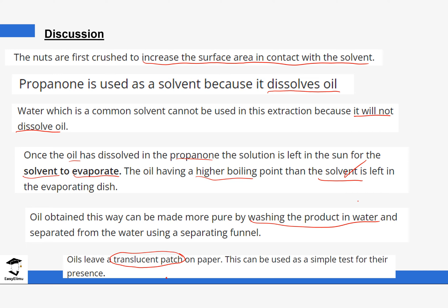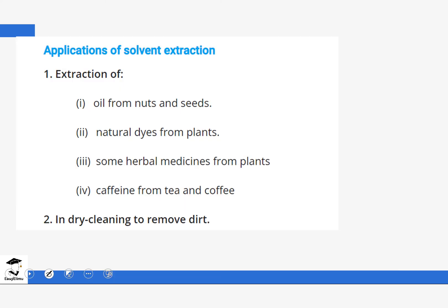Solvent extraction is used to extract oil, but there are other applications. These include the extraction of natural dyes from plants, extraction of herbal medicines from plants, extraction of caffeine from tea or coffee, and it is also used in dry cleaning. These are other ways this method can be applied in daily life.